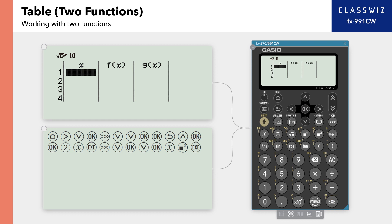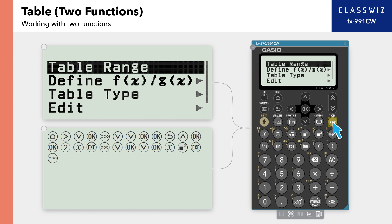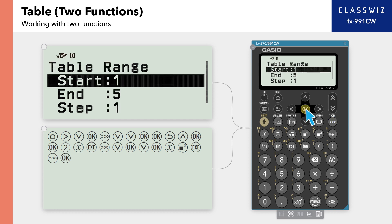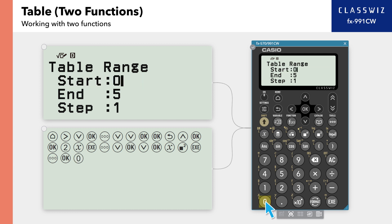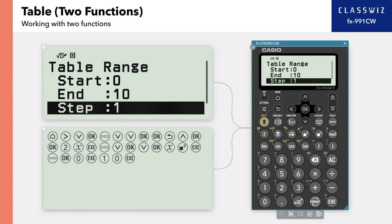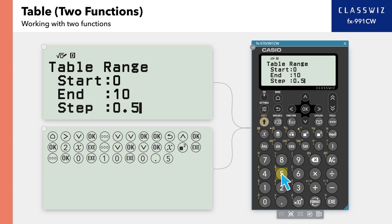Finally, we need to enter the range of X in the function for values to appear in the table. Press Tools, then select Table Range. In this example, we'll set the range of X to 0 through 10. Enter 0 for Start and 10 for End. To show function values in increments of 0.5, enter 0.5 for Step.